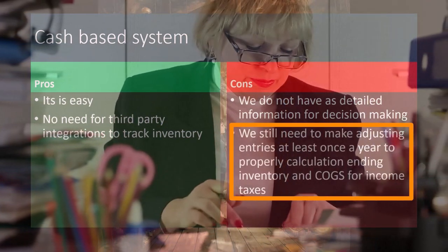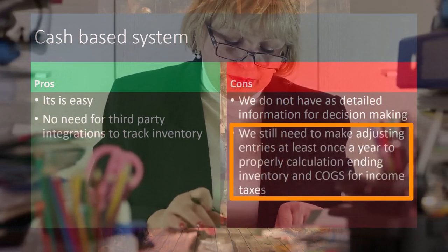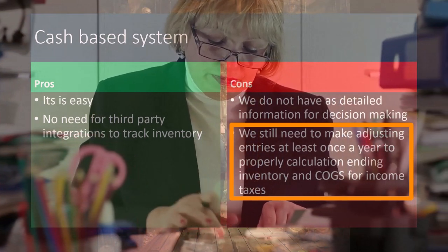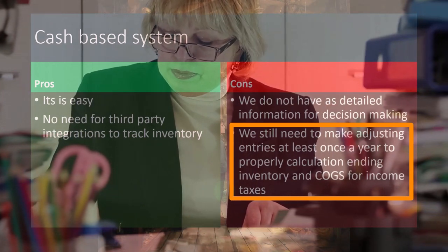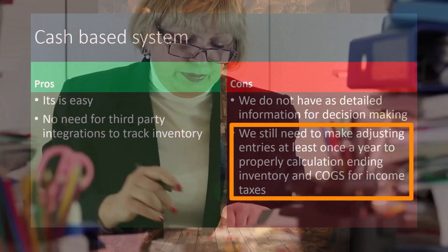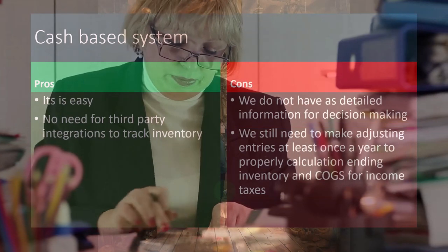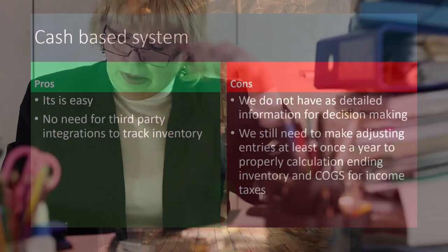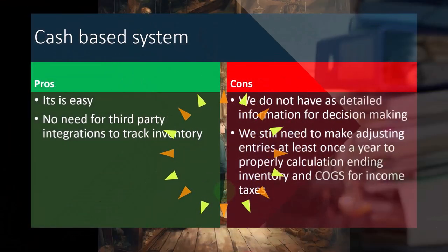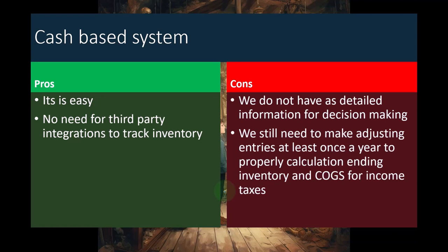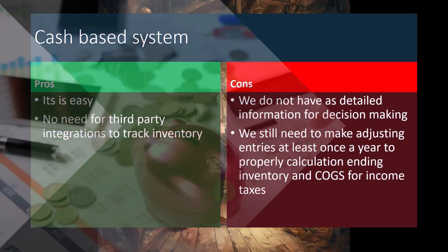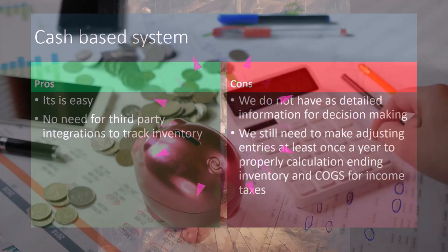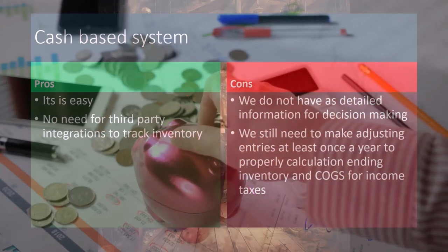We still need to make adjusting entries at least once a year to properly calculate ending inventory and the related cost of goods sold for income taxes. We're doing the easy thing — just expensing, not dealing with the asset account of inventory or accrual concepts. However, at least once a year, the tax code may force us to deal with the accrual concepts, so we'll still have to deal with valuing and counting inventory, including not just the units but also the dollar amount. We'll discuss methods to do that in future presentations.